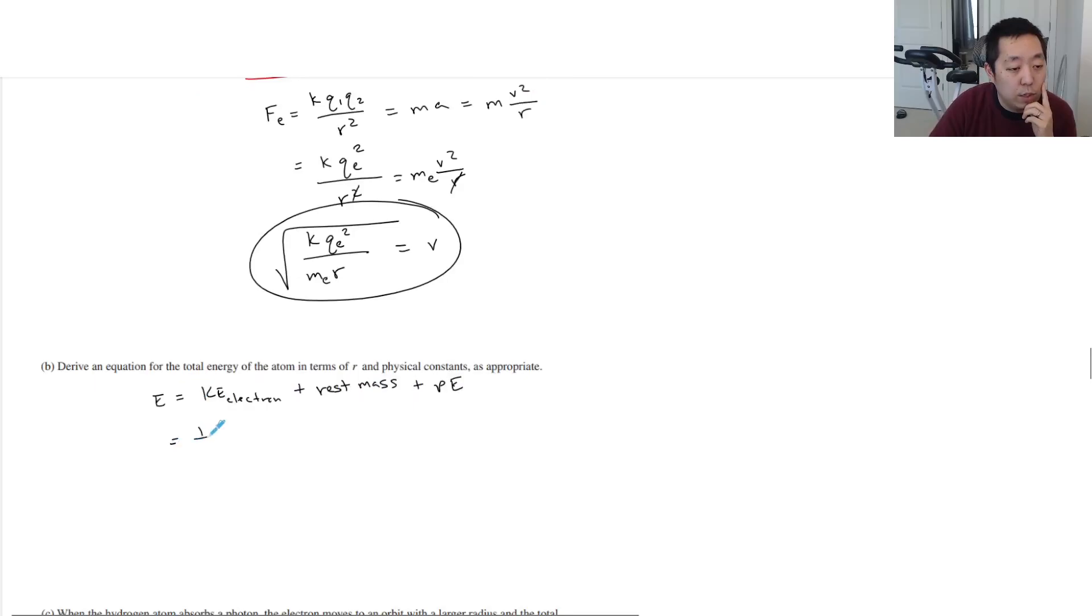So we would do all of that. I would say that's one half mass of the electron, the velocity electron squared, plus E equals mc squared. So that would be the mass of the proton plus the mass of the electron times c squared, plus the potential energy. And we would use negative k q1 q2 over r. It's similar to gravitational potential energy, but it's for that.